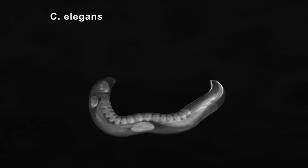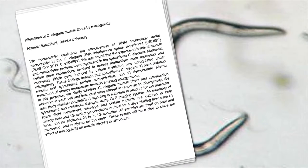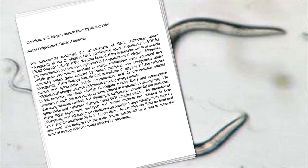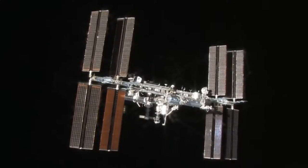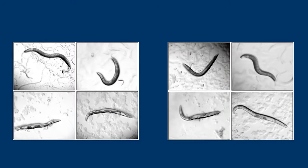In a new investigation entitled Alterations of C. elegans Muscle Fibers by Microgravity, crew members of the International Space Station will grow two batches of worms, one in microgravity and one in a centrifuge, allowing the worms to experience simulated gravity.